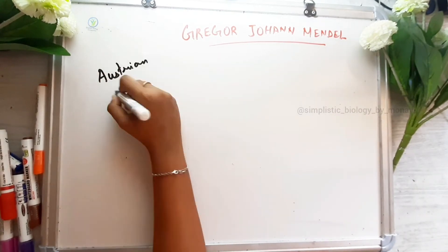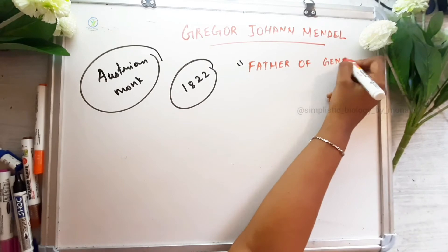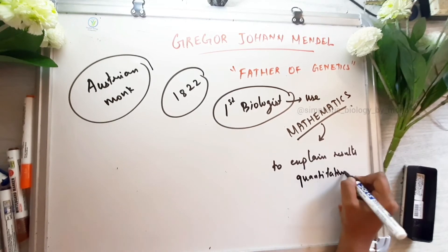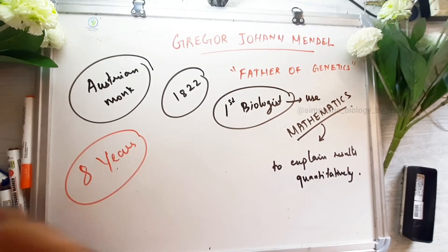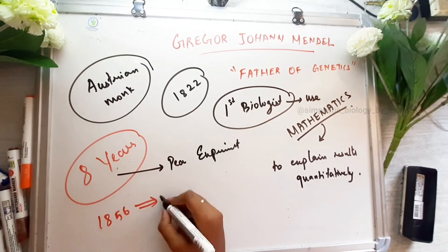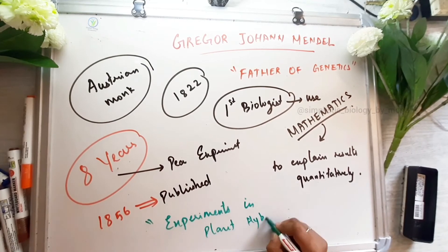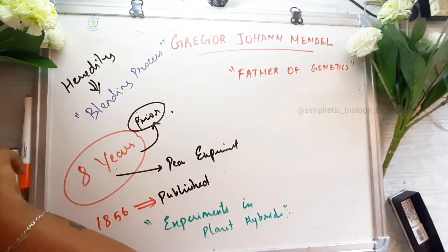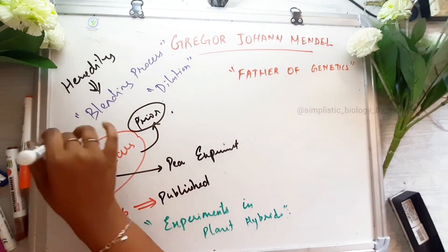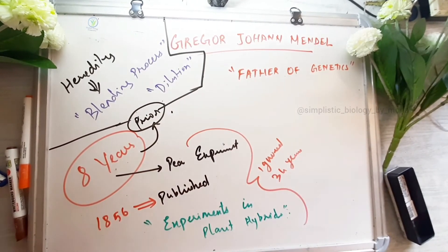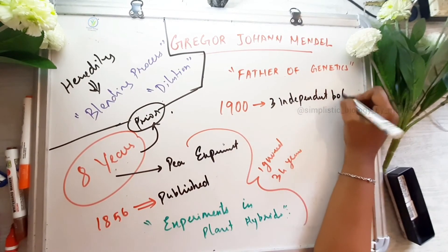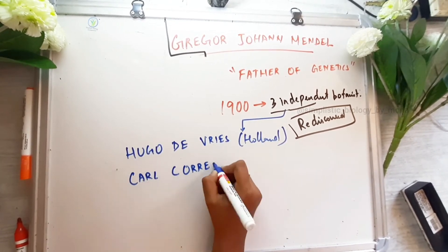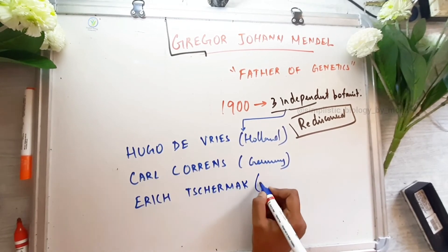Gregor Johann Mendel was an Austrian monk born in 1822. He is the father of genetics and the first biologist to use mathematics to explain results quantitatively. His work was rediscovered by three independent botanists in 1900: Hugo de Vries from Holland, Karl Correns from Germany, and Erich von Tschermak from Austria.